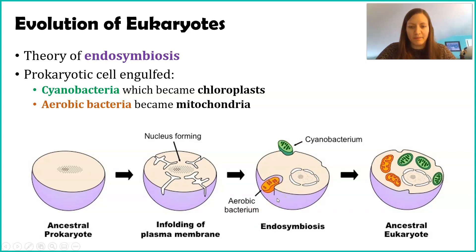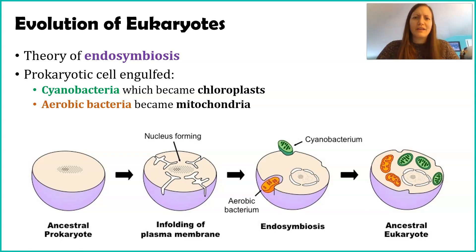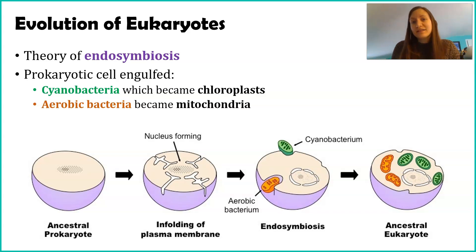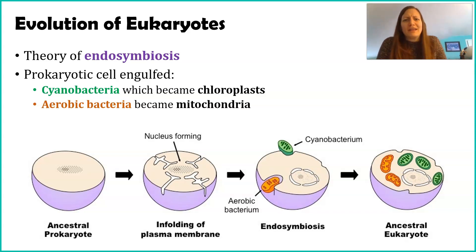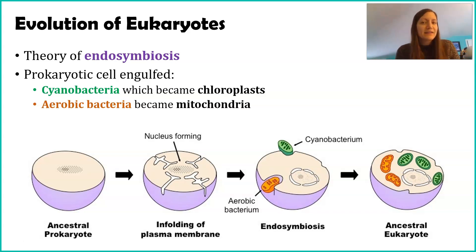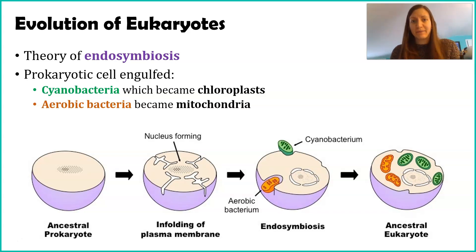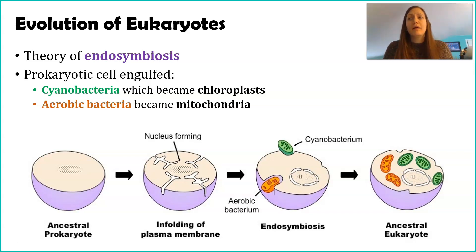We'll start with the aerobic bacterium. We think the ancestral prokaryote engulfed it — this is typical; this is how prokaryotes eat. They engulf materials, surround them, use different proteins and enzymes to break down whatever they absorbed and get the nutrients, amino acids, and fats they need, then expel the waste. Scientists think they engulfed an aerobic bacterium — a bacteria able to use oxygen to break down sugars and create energy — with the intention of consuming it, but it didn't.